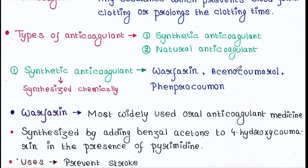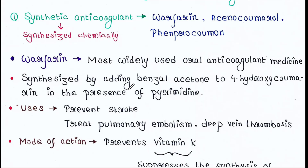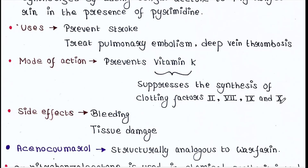Let's talk about them one by one. Warfarin: these are the most widely used oral anticoagulant medicine. They are synthesized by adding benzyl acetone to 4-hydroxycumarine in the presence of pyrimidine. Uses: they prevent stroke, treat pulmonary embolism and deep vein thrombosis. Mode of action: they prevent vitamin K and suppress the synthesis of clotting factors 2, 7, 9, and 10.